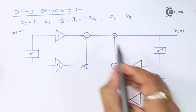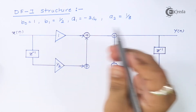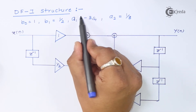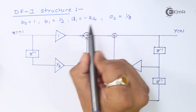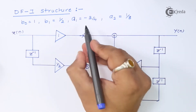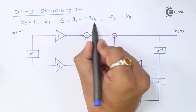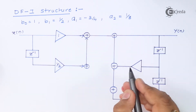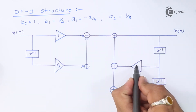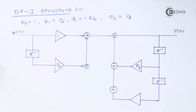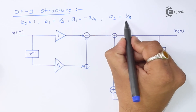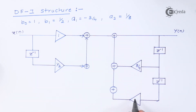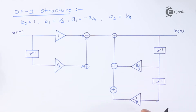On the right-hand side we always write the a values with a negative sign. Since a₁ already has a negative value of minus 3/4, the total result placed is plus 3/4. The a₂ value is 1/8, so after applying the negative sign we write minus 1/8. This completes the Direct Form 1 structure.